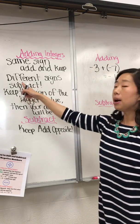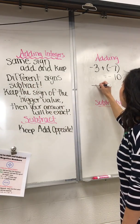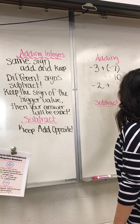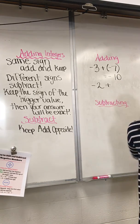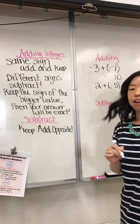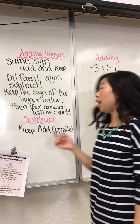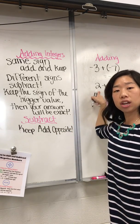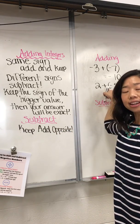When we're talking about different signs, it looks a little like this. Let's do two plus negative five. If we have two plus negative five, they are different signs. One is positive and this one's negative.